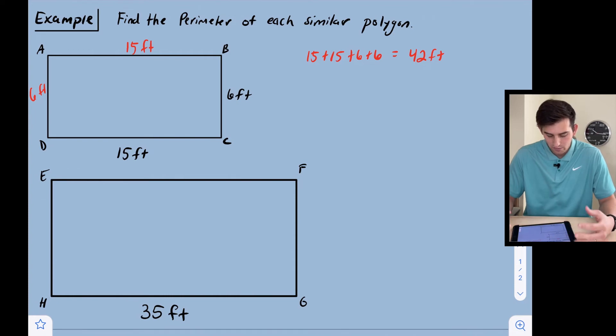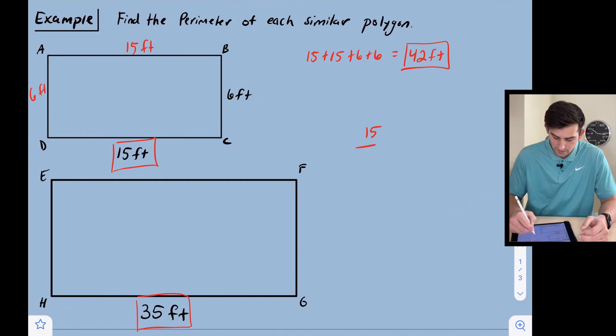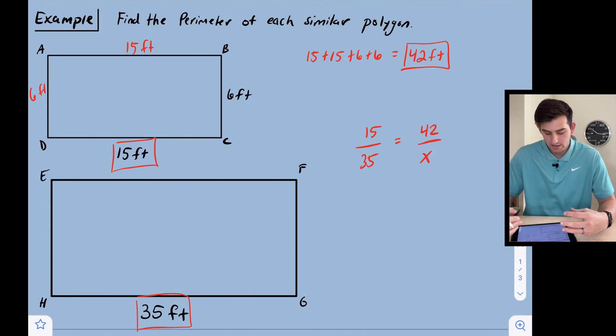Now we want to find the perimeter of our larger similar rectangle. We can take two side lengths that we know, 15 and 35, and we also know the perimeter of the first shape.